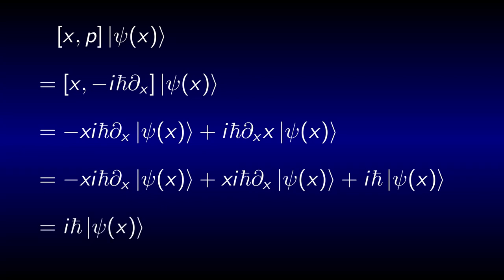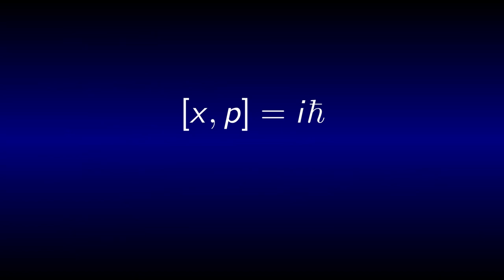Because we never specified the wavefunction, we can now generally state that the commutator between position and momentum gives i h-bar. This is another fundamental difference between classical and quantum mechanics.